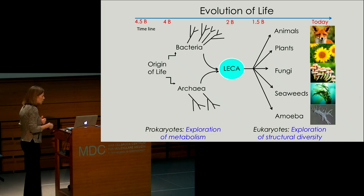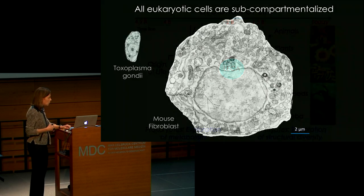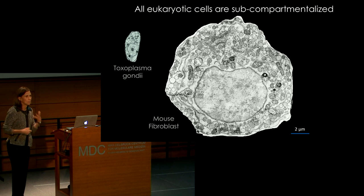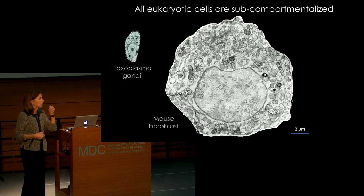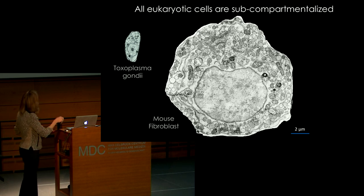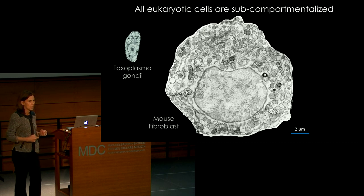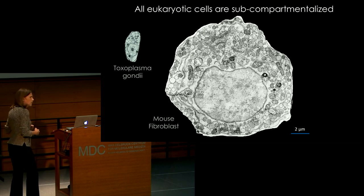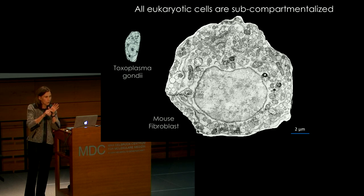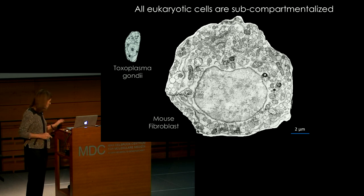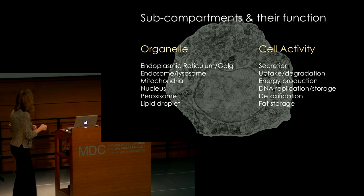The last common eukaryotic ancestor had all of these subcellular compartments that we know characterize cells today. Here's a mouse fibroblast full of subcellular compartments: the nuclear envelope, the endoplasmic reticulum, mitochondria. And the simple Toxoplasma gondii has all of the same organelles. Basically all eukaryotic life on Earth has the same subset of organelles.